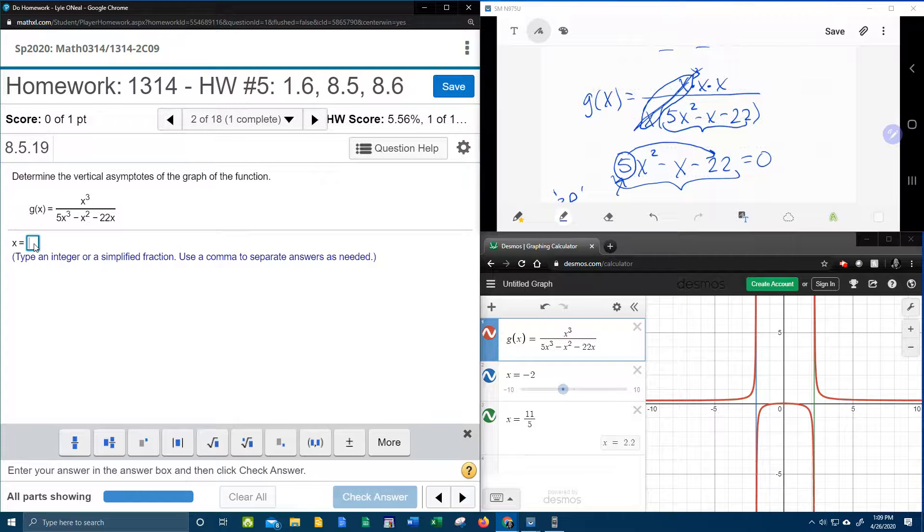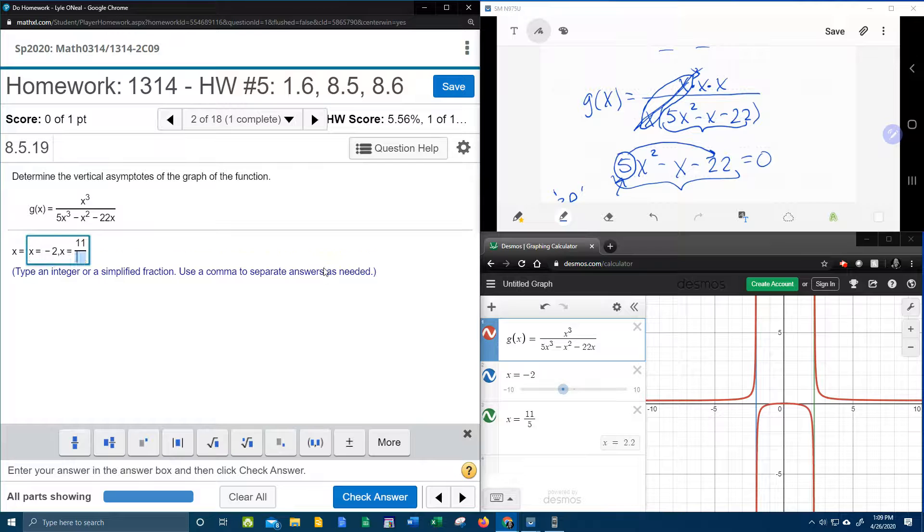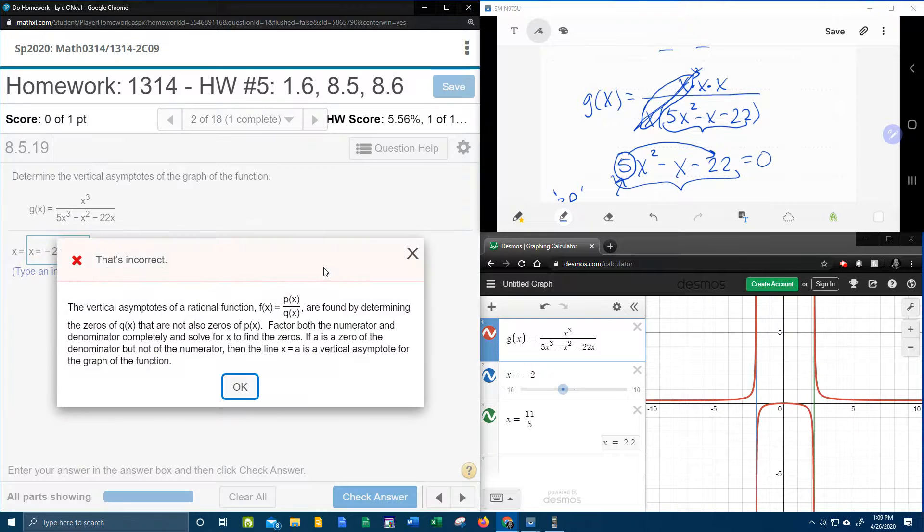Alright, here we go, finally let's check our MyLabMath. x is equal to negative 2, and then it says use a comma to separate your answer. So we're going to say comma, x equals 11 fifths, vertical asymptotes is found to determine the zeros that are not also zeros of p of x.